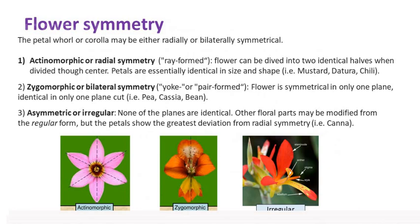Flowers are further categorized based on their symmetry. The petal whorl or corolla may be either radially or bilaterally symmetrical. Actinomorphic or radial symmetry means the flower can be divided into two identical halves when divided through the center — petals are essentially identical in size and shape. Examples include mustard, datura, and chili. The next category is zygomorphic or bilateral symmetry, where the flower is symmetrical in only one plane. Cassia and bean flowers are good examples. Asymmetric or irregular means none of the planes are identical, and canna flower is an example.